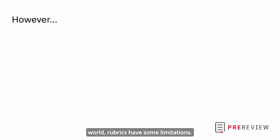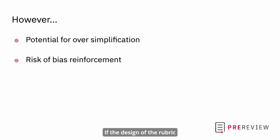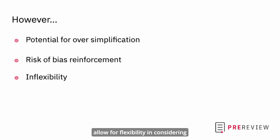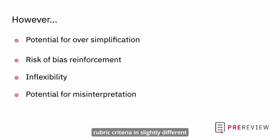However, just as about everything in this world, rubrics have some limitations. To name a few: if not designed carefully, a rubric can oversimplify complex proposals, potentially overlooking nuanced and innovative ideas. If the design of the rubric unintentionally incorporates existing biases or flawed criteria, it could perpetuate or even exacerbate those biases in the review process. Strict adherence to some rubrics may not allow for flexibility in considering unique or unconventional proposals that do not fit neatly into predefined criteria. Different reviewers might interpret rubric criteria in slightly different ways, leading to inconsistent evaluations.